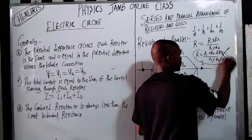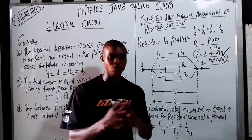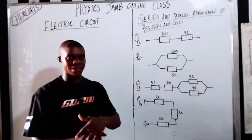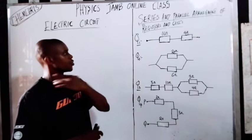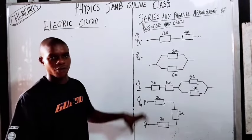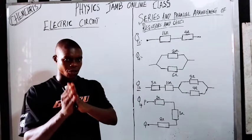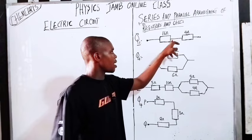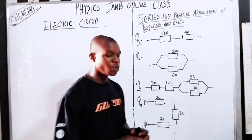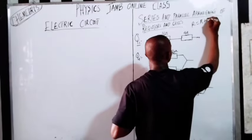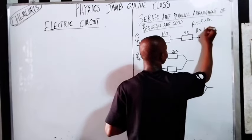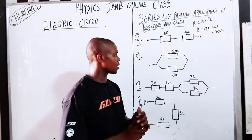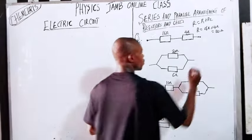Now let's start solving questions on series and parallel connections. Let's evaluate the first question. This one is a series connection because the positive end of one resistor is connected to the negative end of the next. So R equals R1 plus R2 — the answer is 16 ohms plus 4 ohms equals 20 ohms. For the second question, these two resistors are connected in parallel. We have one over R equals one over R1 plus one over R2 plus one over R3, but here we have only two resistors.